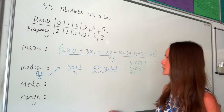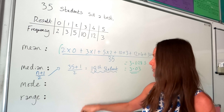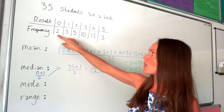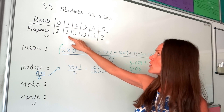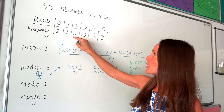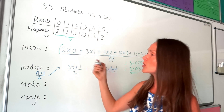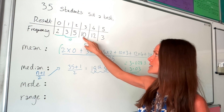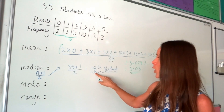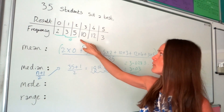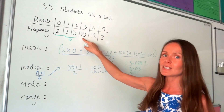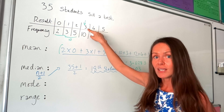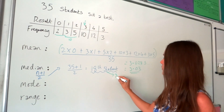To find the 18th student, we count through the frequencies. Two students in the first column, plus three in the next gives five. Adding the five in the next column gives ten students so far. Adding the ten students in the next column gives 20, which passes the 18th student. So the 11th through 20th students fall into that column, meaning the median result is three.